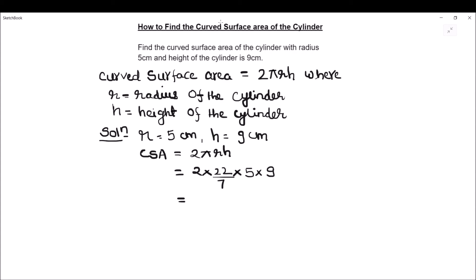After calculating, we get 1980 square centimeters divided by 7, which comes out to be 282.85 square centimeters. The curved surface area of the given cylinder is 282.85 square centimeters.